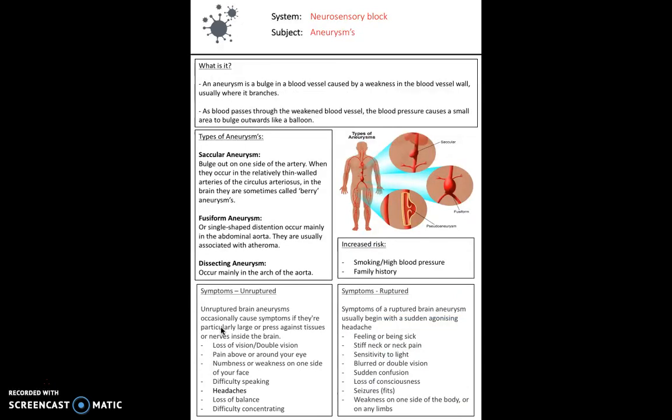Next, we look at an aneurysm — a localized, blood-filled balloon-like bulge in the wall of a blood vessel. It can put pressure on surrounding nerves or brain tissue, which is where the danger comes from, but it could also leak and cause a hemorrhage.